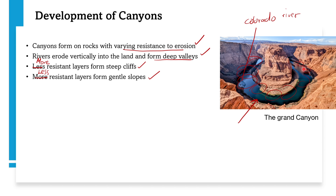Less resistant layers form gentle slopes, while more resistant top layers form steep cliffs. This is how canyons develop from plateaus. To summarize the sequence: lava solidifies to form a plateau, the plateau is eroded by a river through vertical erosion, and we end up with a canyon where more resistant layers form steep cliffs and less resistant layers form gentle slopes.